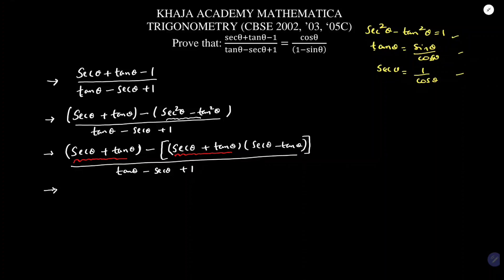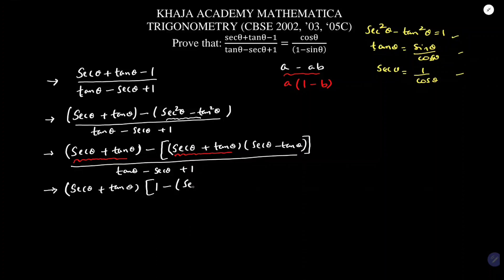Now I will take sec θ + tan θ as a common factor from the numerator. Just like in A - AB, taking A common gives A(1 - B), here taking sec θ + tan θ common leaves 1 minus (sec θ - tan θ). The denominator remains tan θ - sec θ + 1.